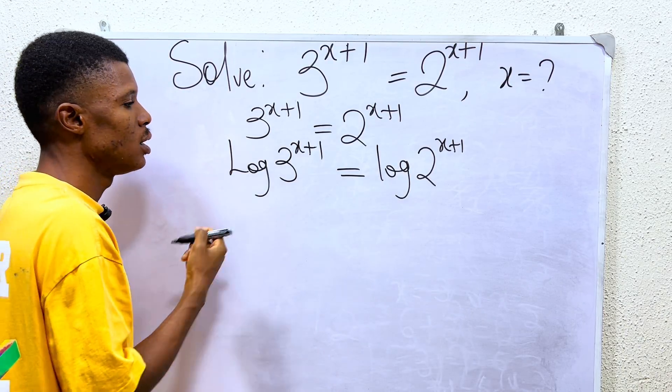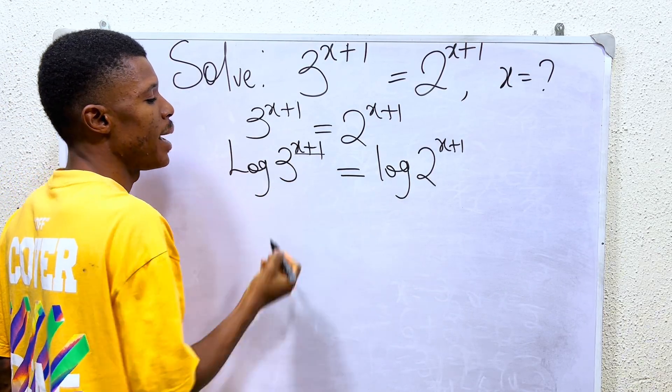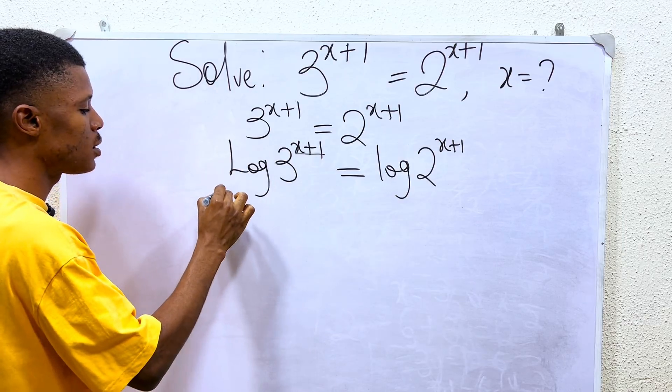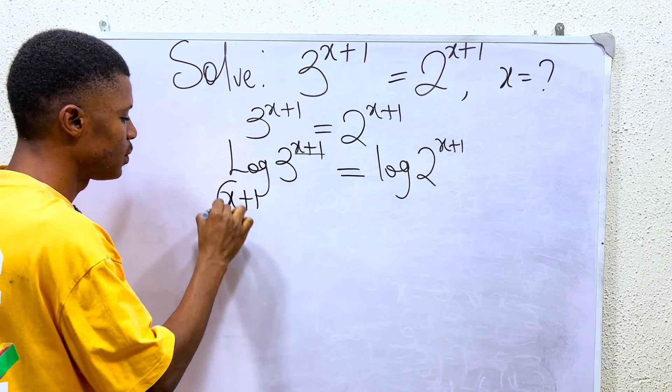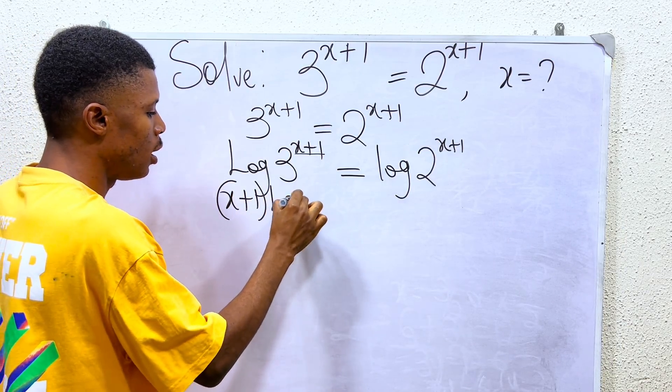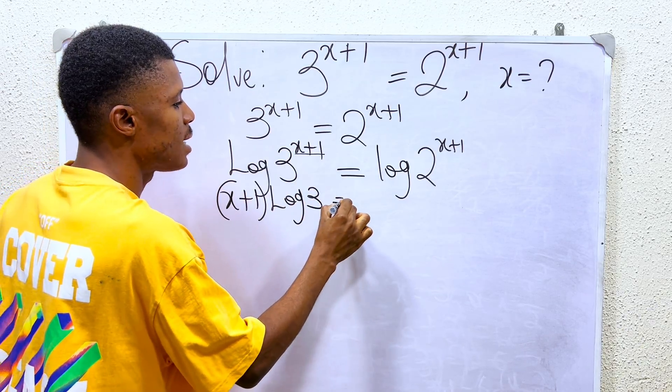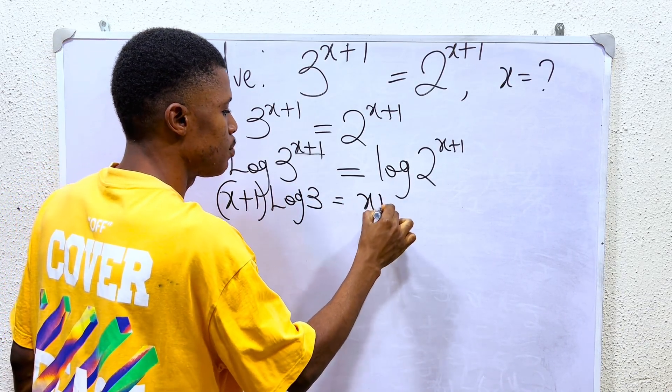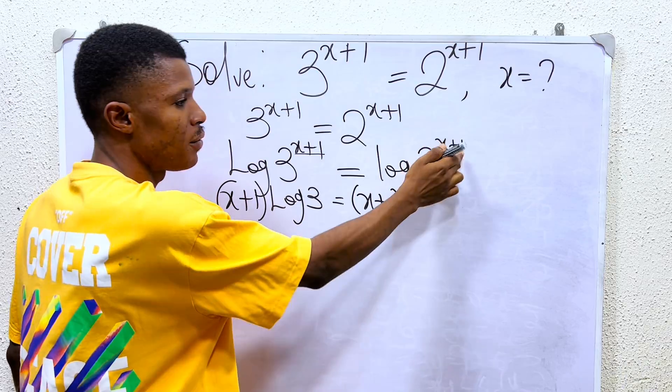Since the power of the number is x+1, we can simply multiply it as (x+1) into log 3, and that equals (x+1), again the power for this, into log 2.